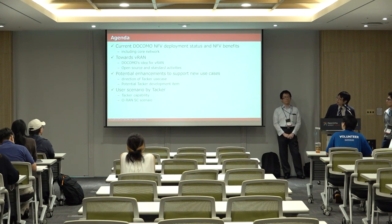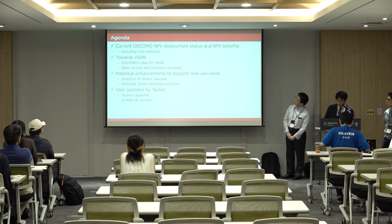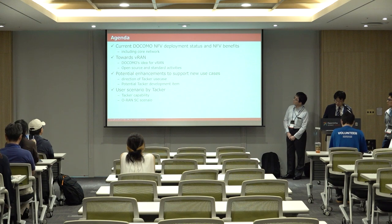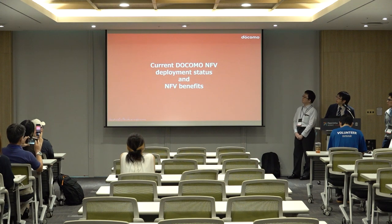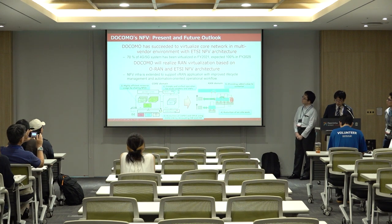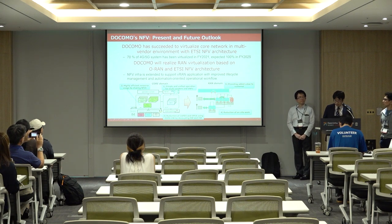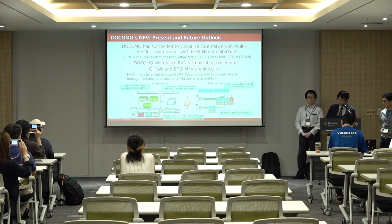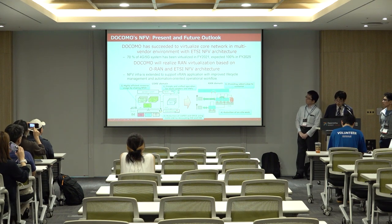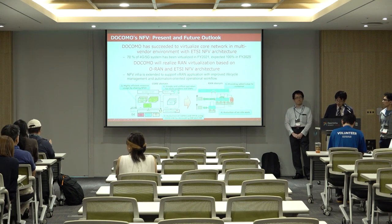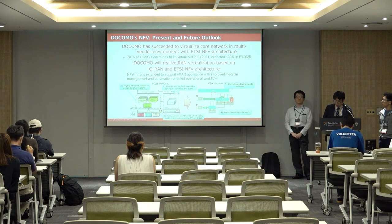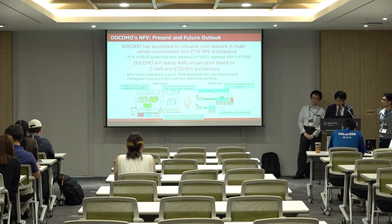In this presentation, I would like to show Docomo's development status using OpenStack TACCAD and the next step of NTT platform including OpenStack for vRAN, and future TACCAD development items and next use cases. As you can see, Docomo has succeeded to virtualize the core network in a multi-vendor environment with ATNP architecture. OpenStack is a key component of the ATNP platform. As a next step, Docomo will realize RAN virtualization using the Kubernetes ecosystem and ATNP architecture.